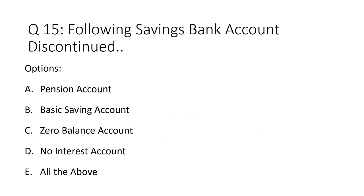Question 15: Which of the following saving bank accounts has been discontinued? Option A: pension account. Option B: basic saving account. Option C: zero balance account. Option D: no interest account. Option E: all the above. The correct answer is Option E — all the above.